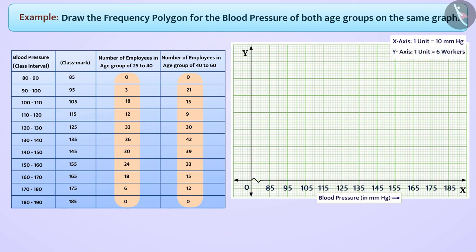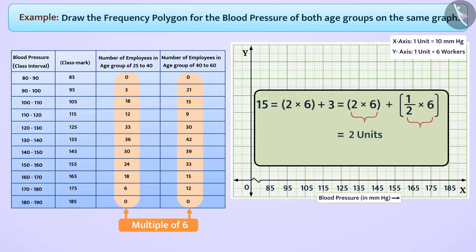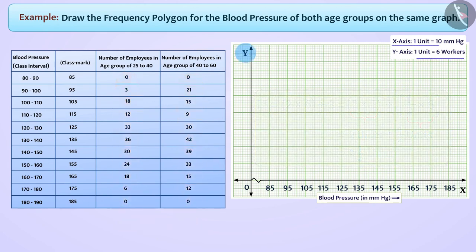Many numbers are multiples of six, and other numbers can also be easily represented by this scale. For example, 15 can be represented as two and a half units. Therefore, on the y-axis we will take the scale as one unit equal to six workers.